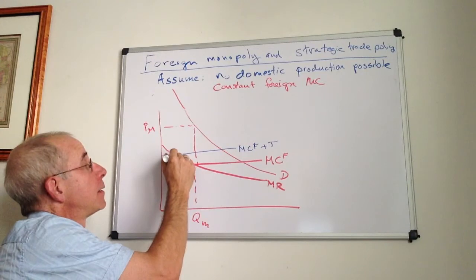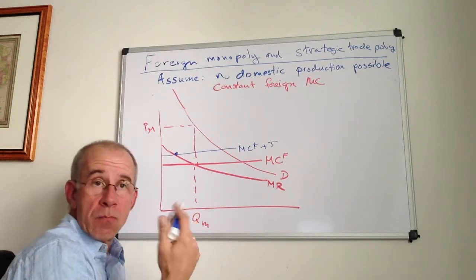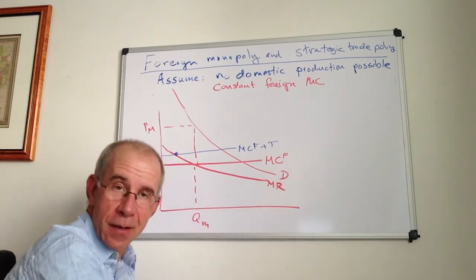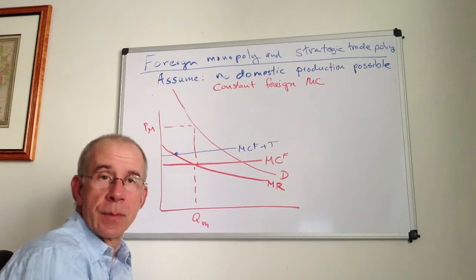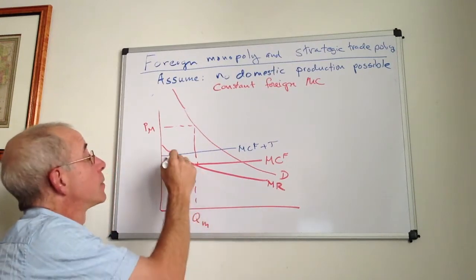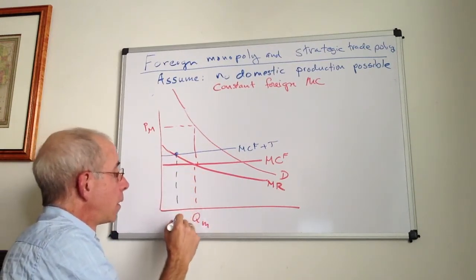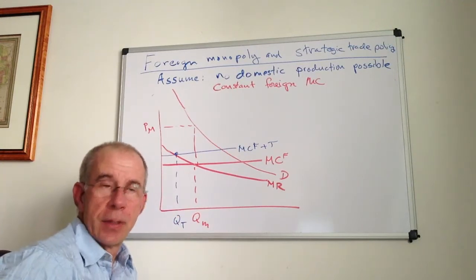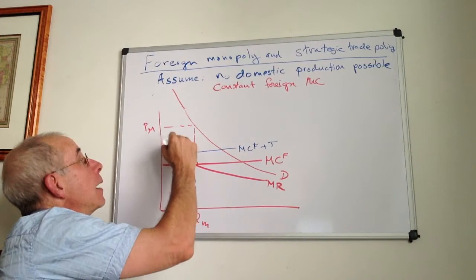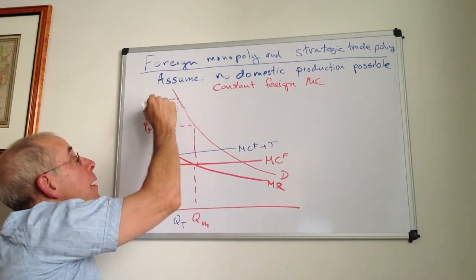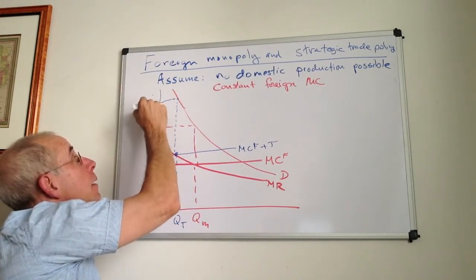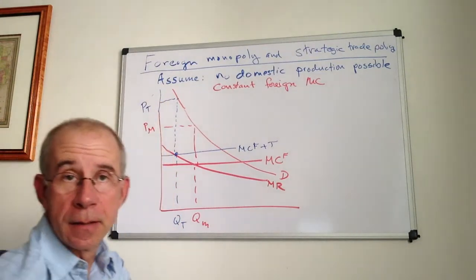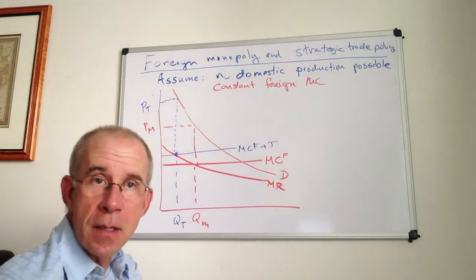Foreigners will respond by choosing where marginal cost plus the tariff, which is the cost of doing business in the economy, equals marginal revenue. They reduce the amount of output, and subsequently there's a big jump in the price inside this domestic economy.